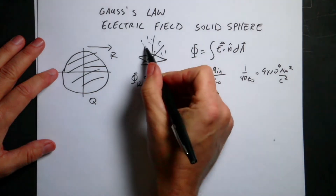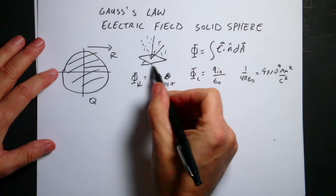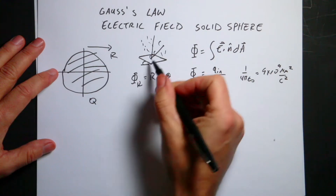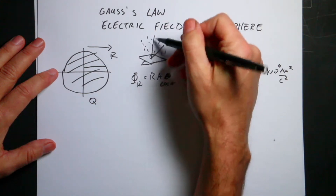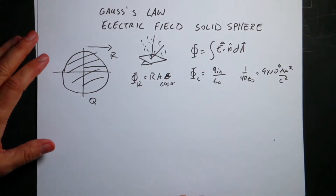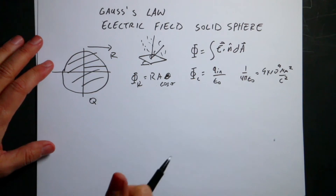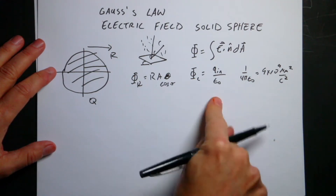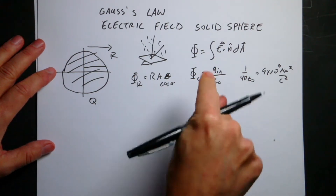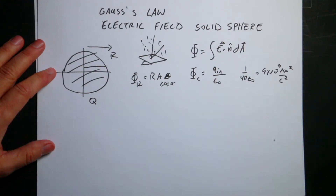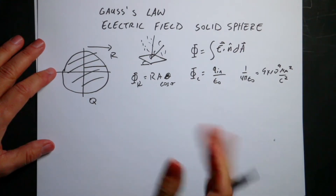I could increase the rain rate, I could increase the size of the area, or I could make the rain hit the paper more perpendicular, and I'd get more rain flux. The same thing is true with the electric field flux — we can calculate the flux from an electric field, except it's not rain and you don't get wet.